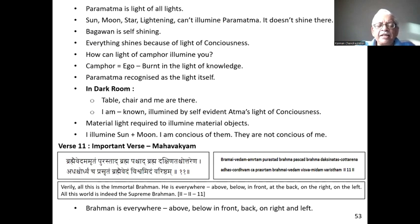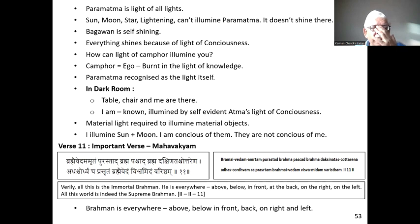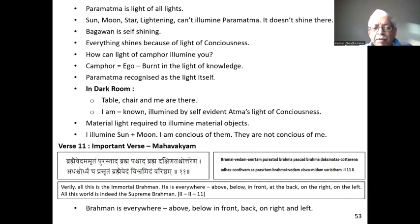As I said last week, mantra number 11 is a very important mantra — it is the Mahavakyam of Mundaka Upanishad. A Mahavakyam is a verse which reveals the identity between the Jivatma and the Paramatma. Here the identity is established by showing that the totality of this world is nothing but the pure Brahman.